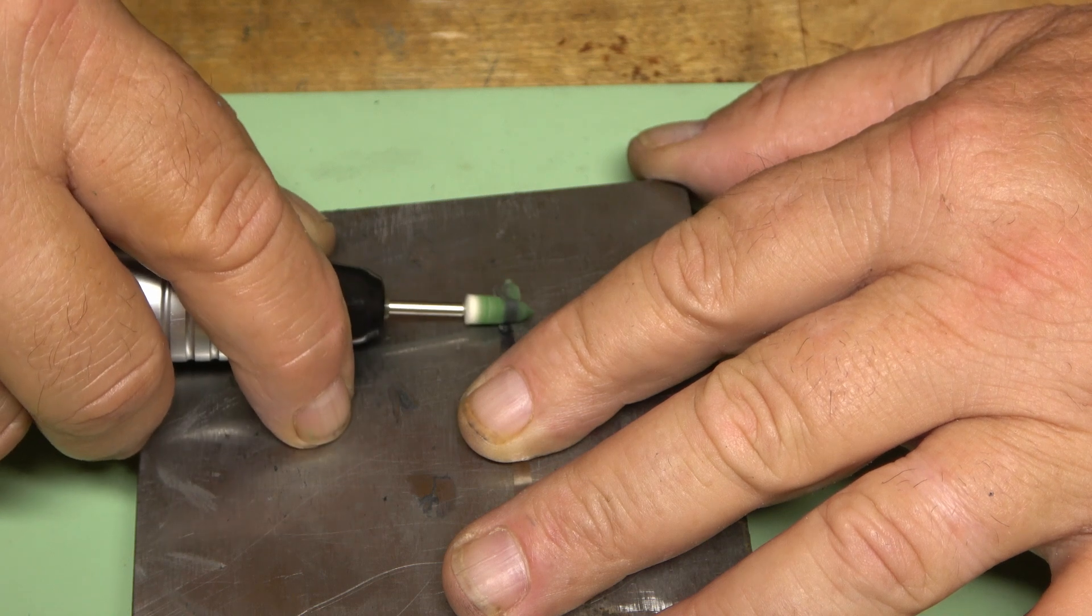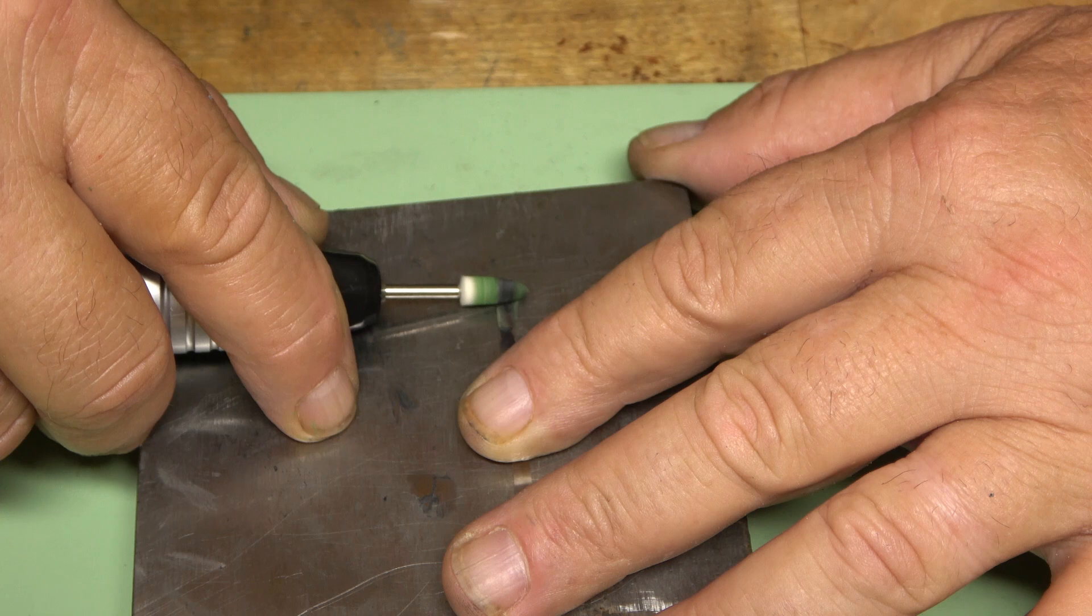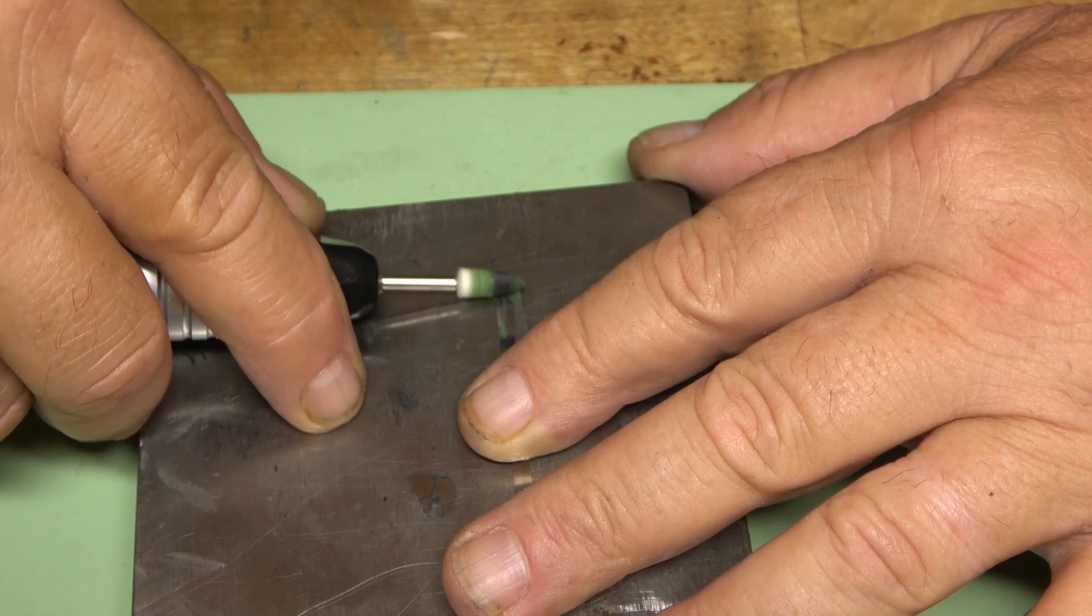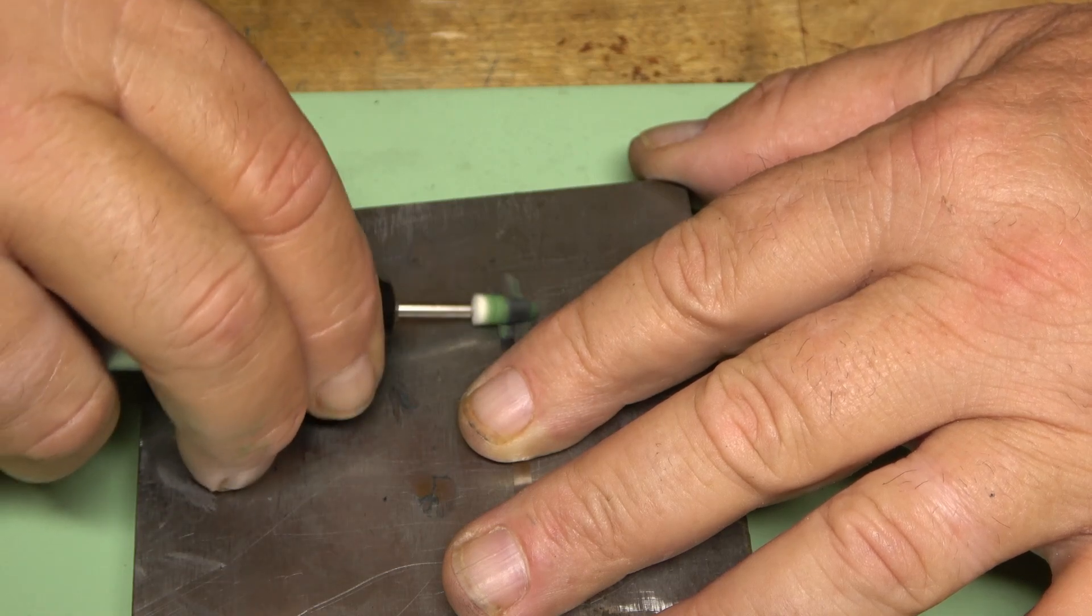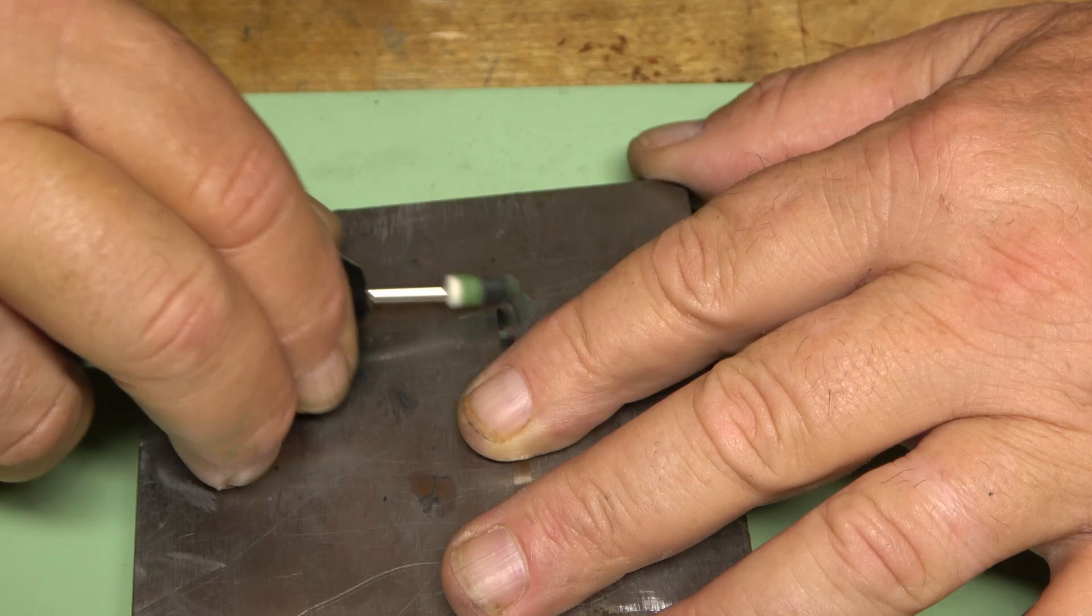And for that, I'm going to use Green Dialux Polishing Compound. Now, don't skip this step. You don't want to take any chances of the metal scratching the brass regulator pins as you're making this adjustment.